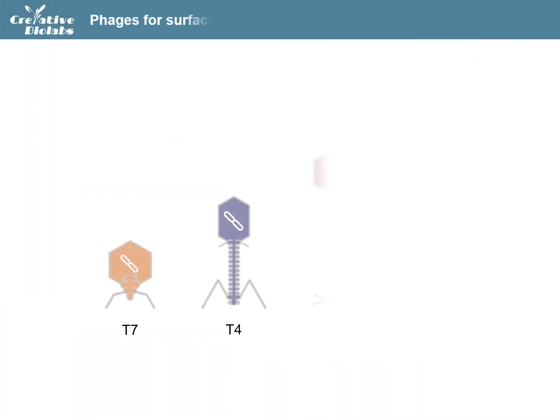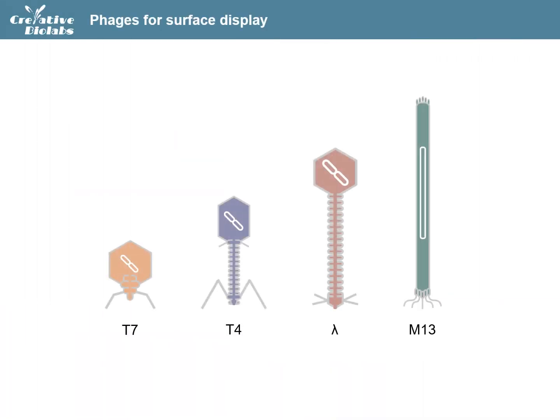In phage display, a gene encoding a protein of interest is inserted into a phage coat protein gene, causing the phage to display the protein on its outside, while containing the gene for the protein on its inside, resulting in a connection between genotype and phenotype.